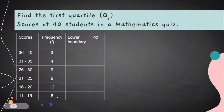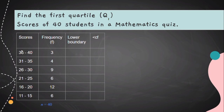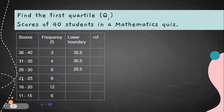To find the lower boundaries, we focus on the lower limit of the scores: 11, 16, 21, 26, 31, and 36. We subtract 0.5 from each: 36 minus 0.5 equals 35.5, 31 minus 0.5 equals 30.5, 26 minus 0.5 equals 25.5, 21 minus 0.5 equals 20.5, 16 minus 0.5 equals 16.5, and 11 minus 0.5 equals 10.5.